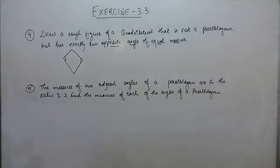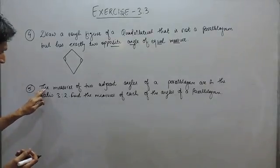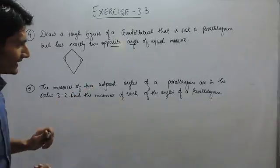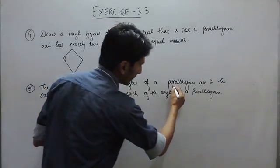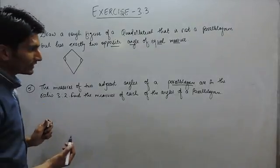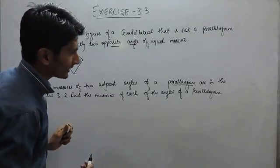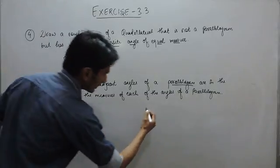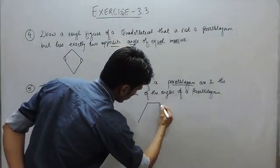In question number 5, it is given that measures of two adjacent angles of a parallelogram are in the ratio 3 is to 2. Find the measures of each of the angles of the parallelogram.